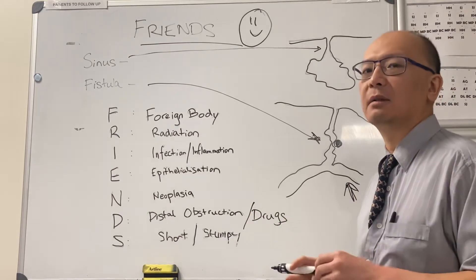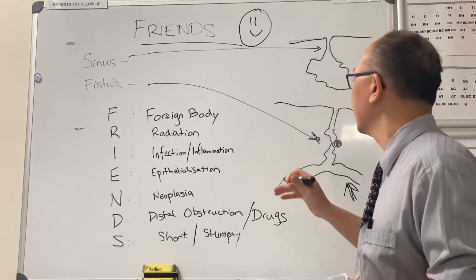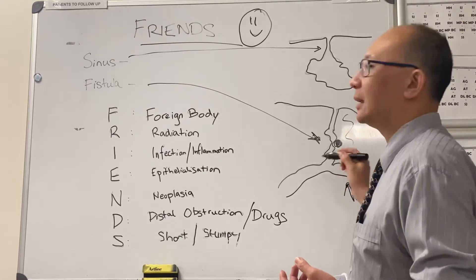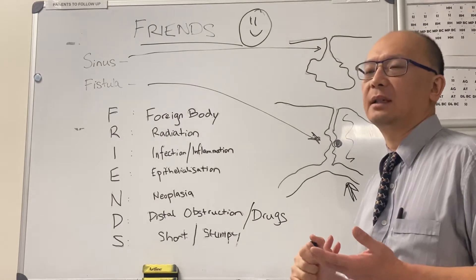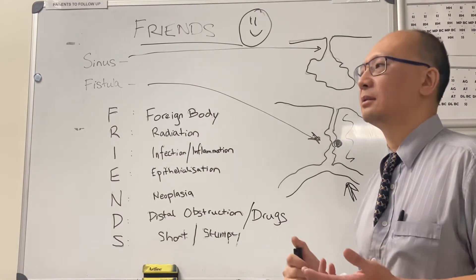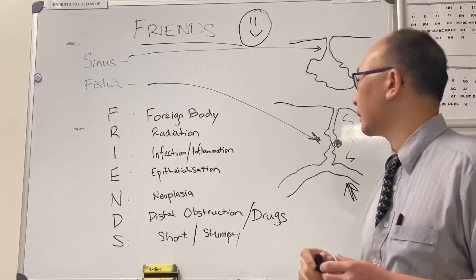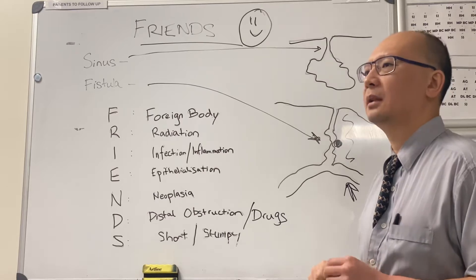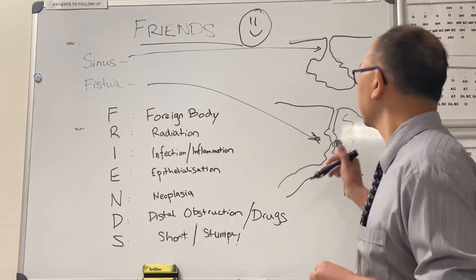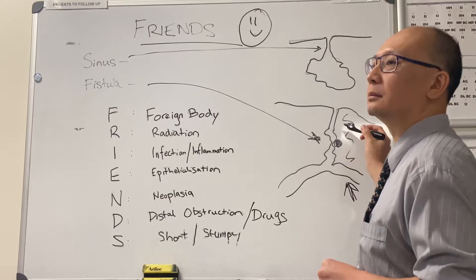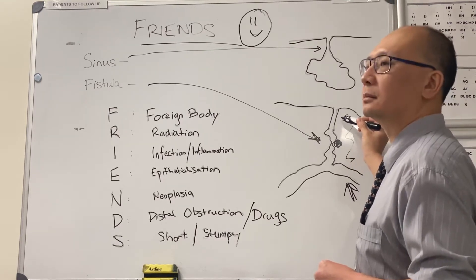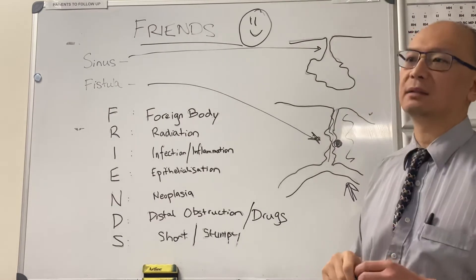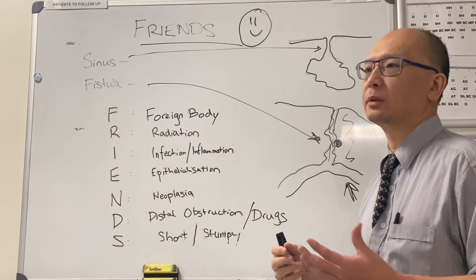But it can heal — you've just got to get all the other conditions right. Infection and inflammation — if there's infection happening in here, then it's less likely to heal. So you want to try to control that with antibiotics or draining abscesses, the usual infection control measures. What does epithelialisation mean, Mickey T? So essentially the epithelial layer extends up and down through that tract. Once that happens, it becomes much more difficult for that tract to close.